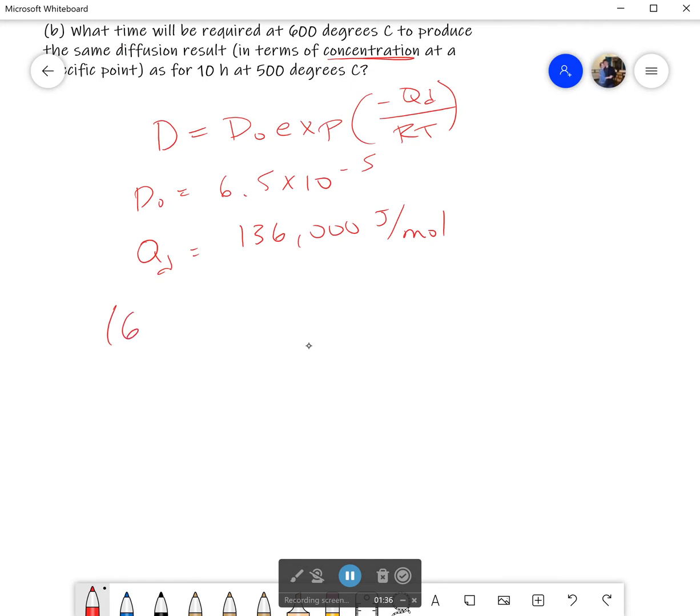Now if I plug that into my equation here, let's see what I get. I'll go ahead and write everything out: 6.5 times 10 to negative fifth meters squared per second. Sorry, I need to explain my units here. Exponential of negative 136,000 joules per mole all over 8.31 joules per mole kelvin. That's going to be multiplied by, let's see here, make sure I have everything correct...